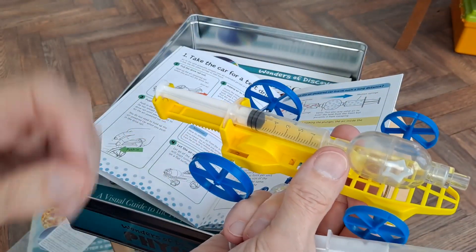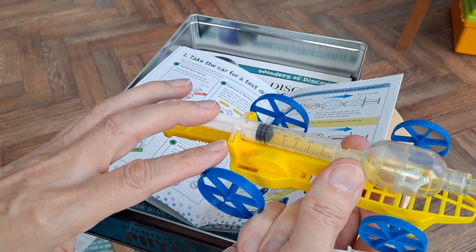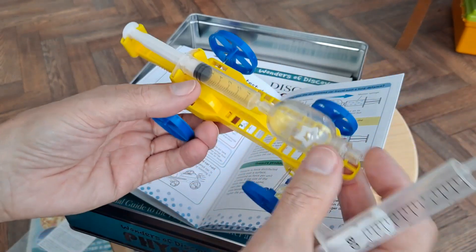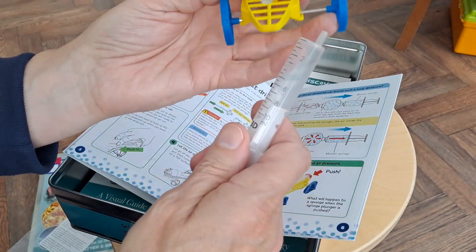So pull the drive rail out, which we've done. Add air to the tank, use the other syringe, 5cc's.